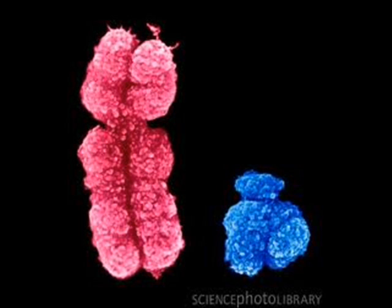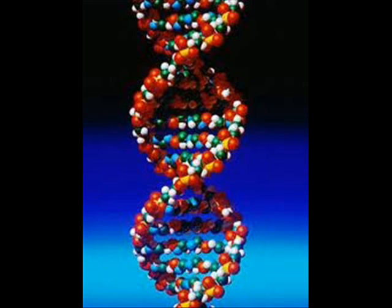When the sperm comes down to fertilize the egg, it brings half of his chromosomes, and the egg gives half of her chromosomes to the offspring. A chromosome is a thread-like structure of genes that carries hereditary information, or DNA.